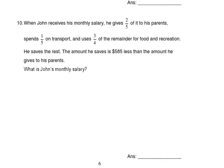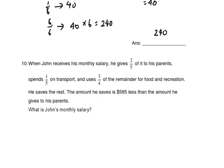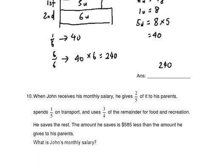Before moving to the next question, I want to highlight a common mistake. Instead of writing one-sixth, arrow, 40 — that notation is incorrect. Please take note of what's wrong and do not make these mistakes during your exam.